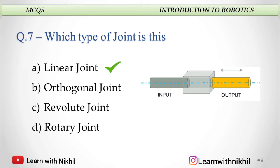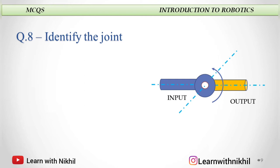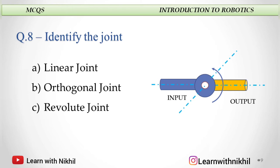Next question: Identify the joint. Is it a linear joint, orthogonal joint, revolute joint, or rotational joint? This is a rotational joint. This is the axis of rotation — the Z axis of rotation — with the input and output link.